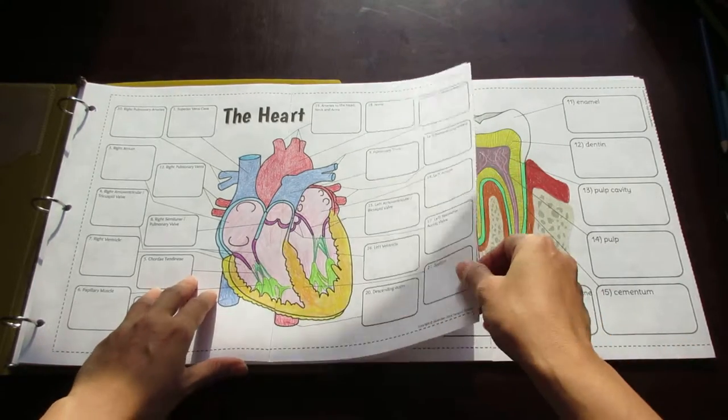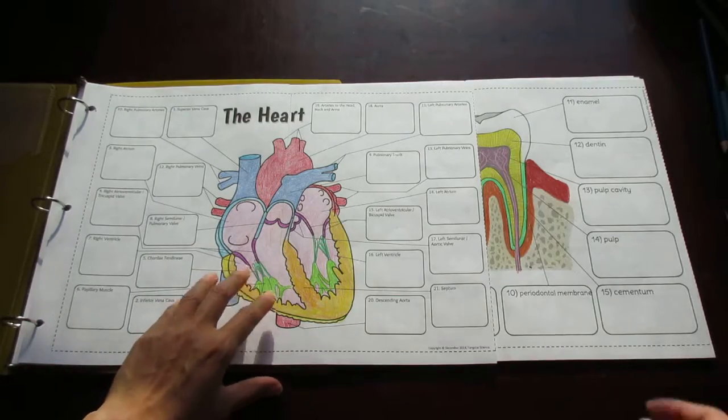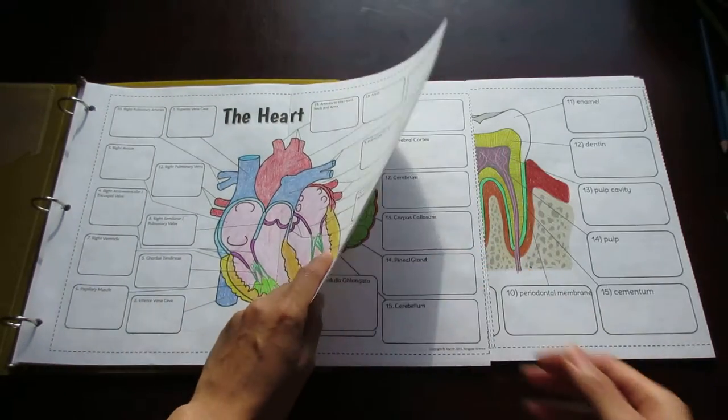They also come in two pages or three pages. So let's take a look at some of the foldables. This one's the heart. It comes in two pages.